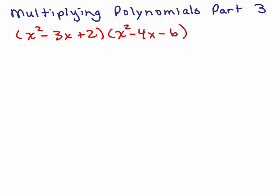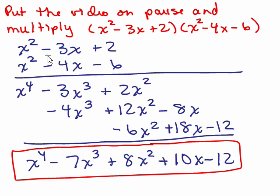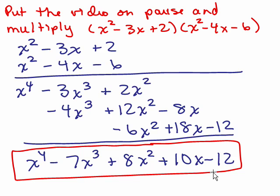This is about multiplying polynomials, part 3. In the last video, we ended by multiplying a trinomial times a trinomial using a vertical format. We had x squared minus 3x plus 2 times x squared minus 4x minus 6. We did x squared times everything in the first polynomial, then negative 4x times everything, then negative 6 times everything, getting 9 terms. Adding all the like terms, we ended up with x to the fourth minus 7x cubed plus 8x squared plus 10x minus 12.